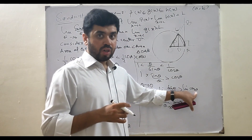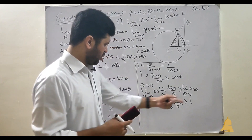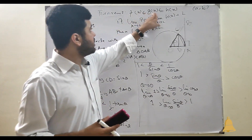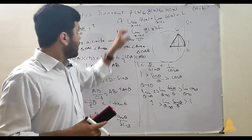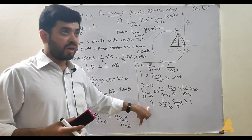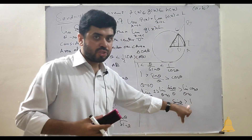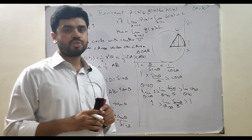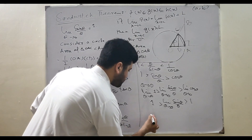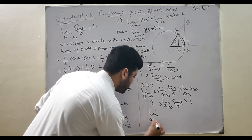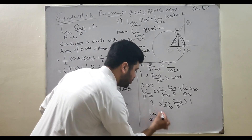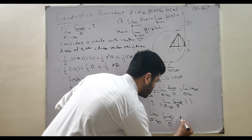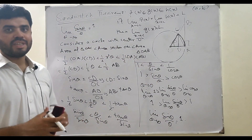As θ approaches 0, cos 0 = 1. So we get 1 ≥ limit of sin θ / θ ≥ 1. By the Sandwich Theorem, since f(x) and h(x) both approach 1, g(x) must also approach 1. Therefore, the limit as θ approaches 0 of sin θ / θ equals 1. That's the proof.